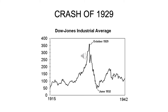The stock market crash, however, did not cause the Great Depression. It was merely the final straw. The economy in various segments had been weak during the latter part of the 1920s, so when the market crashed in October of 1929, it took the rest of the economy down with it.